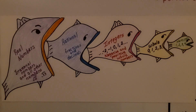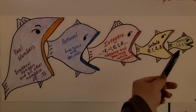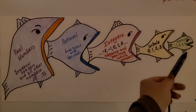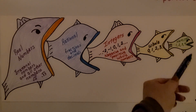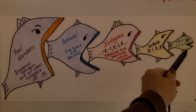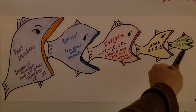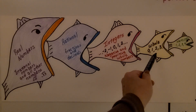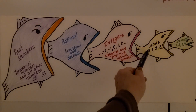Some of you who watch all my videos have seen my fish before. These are the natural numbers, so that would be like one, two, three, four, five, six, and so on. Whole numbers include the natural numbers but also include zero.